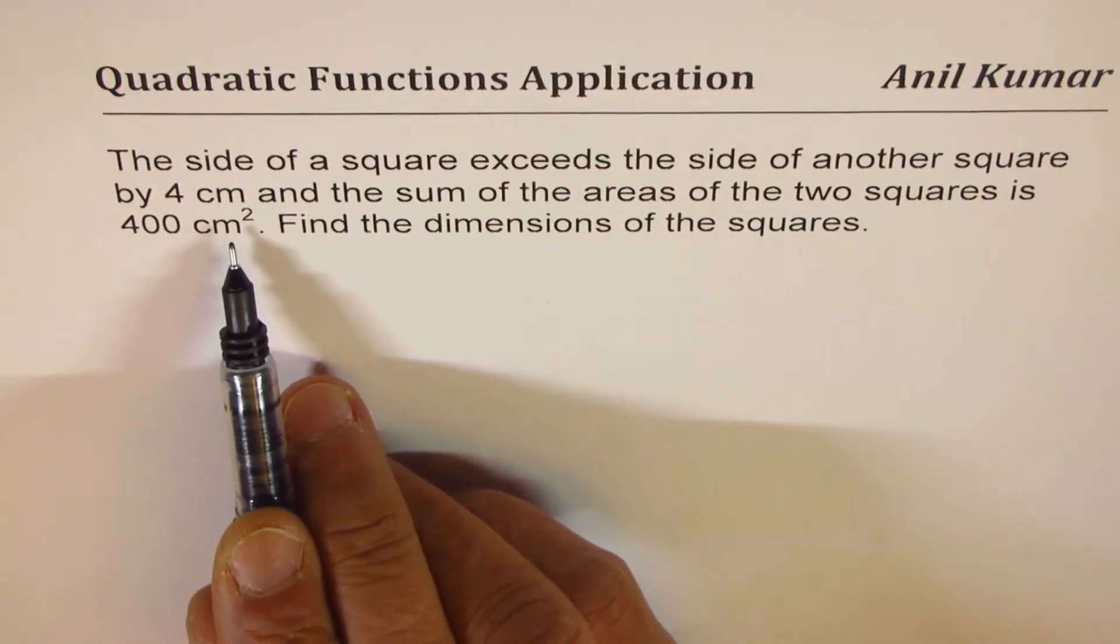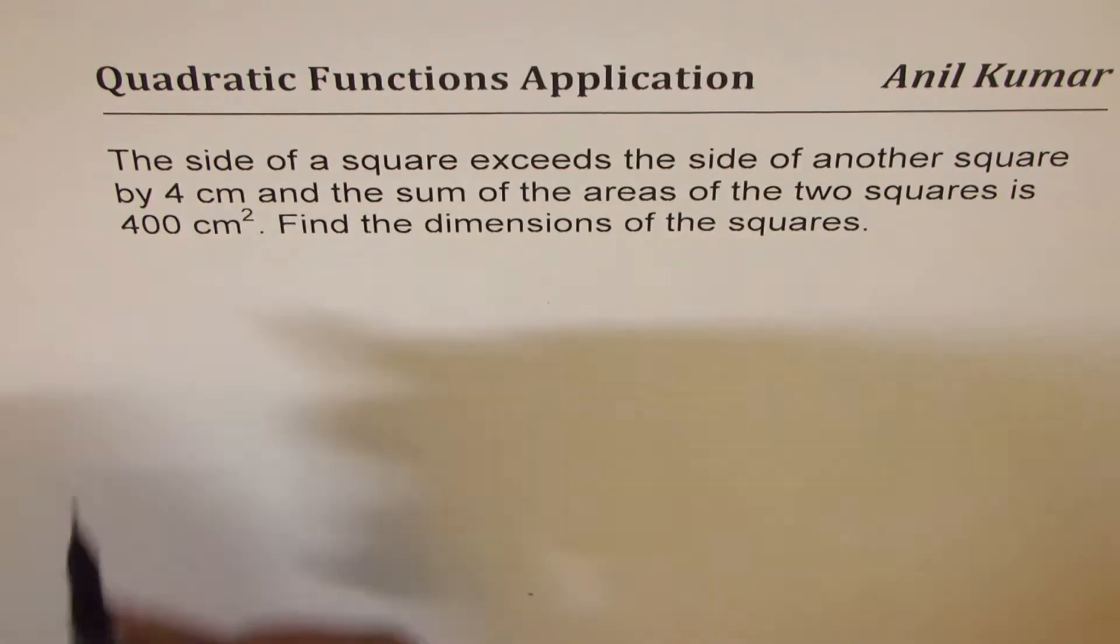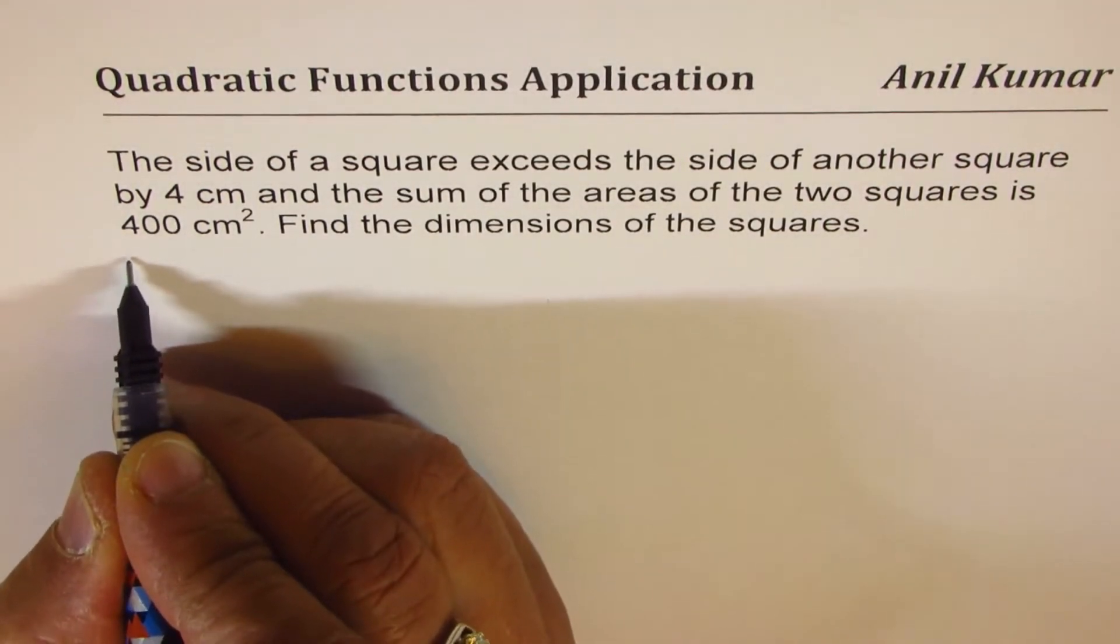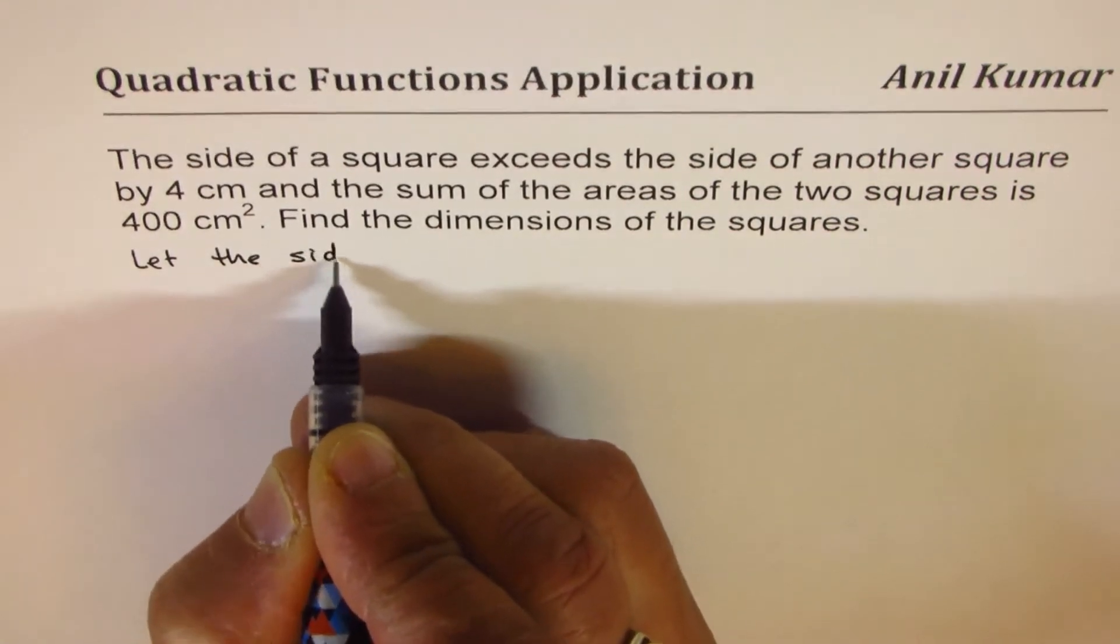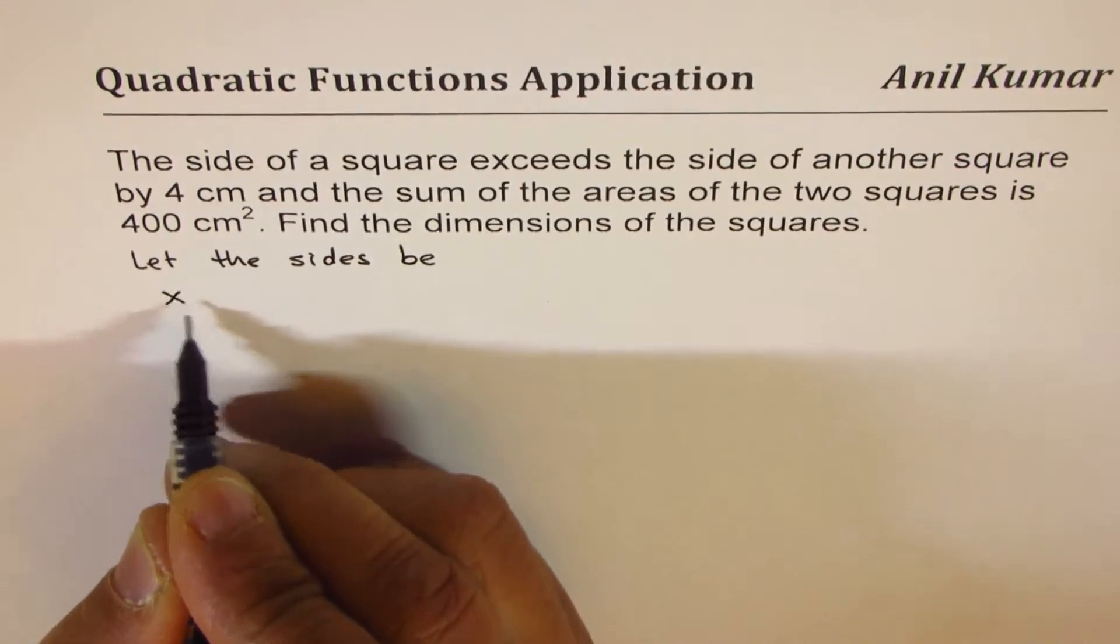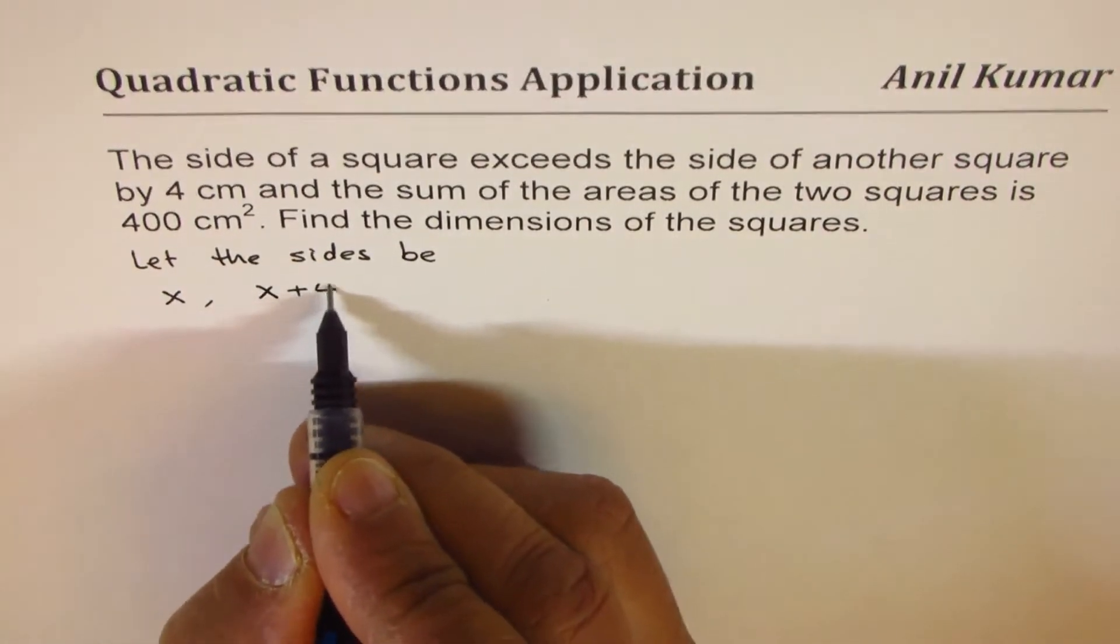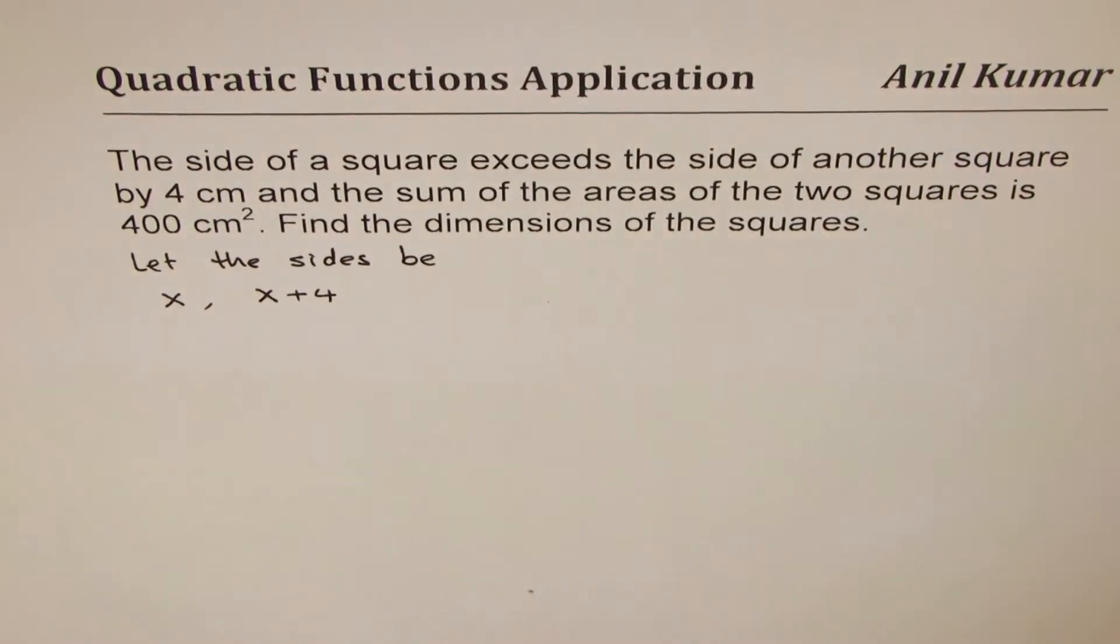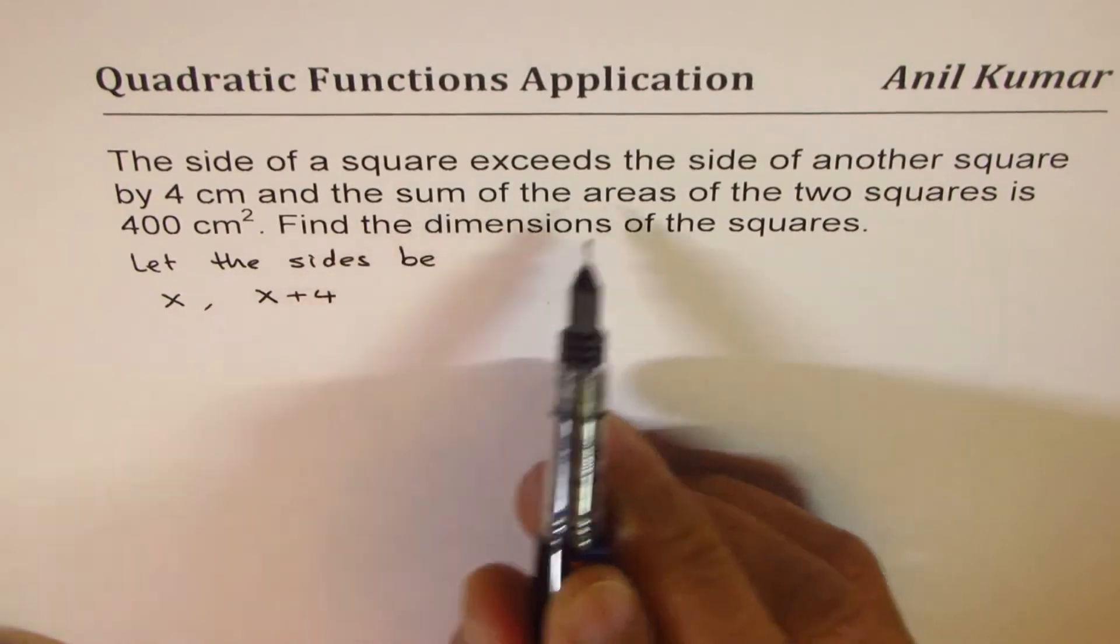400 centimeters squared. Find the dimensions of the squares. So let's say let the sides be x for the first one and the other one is x plus 4. So these are the two squares.